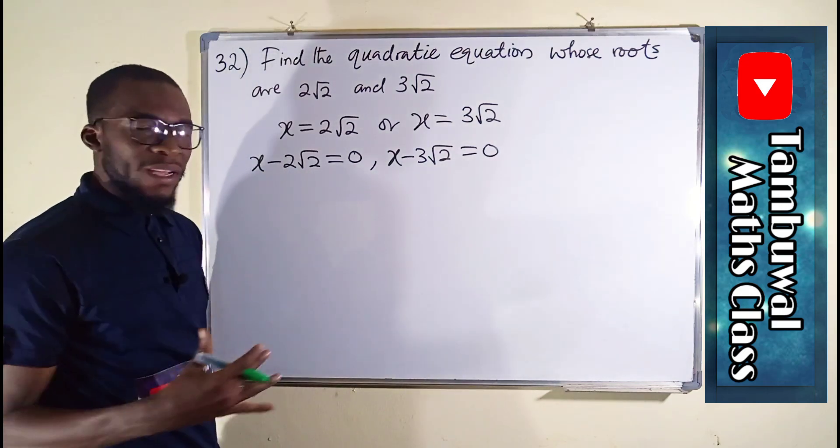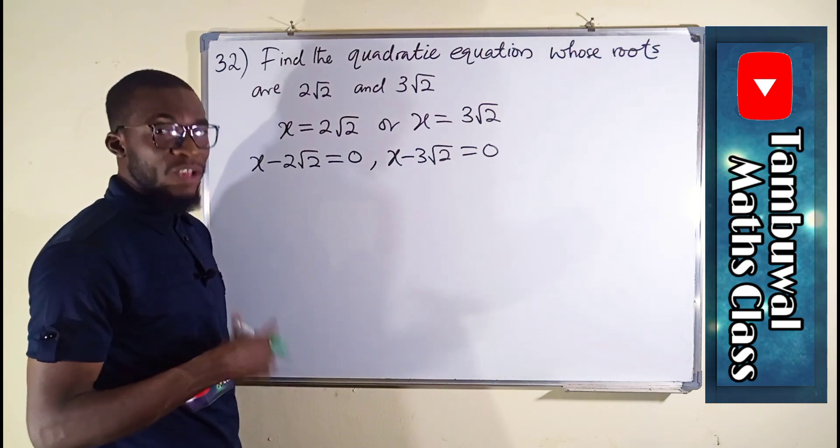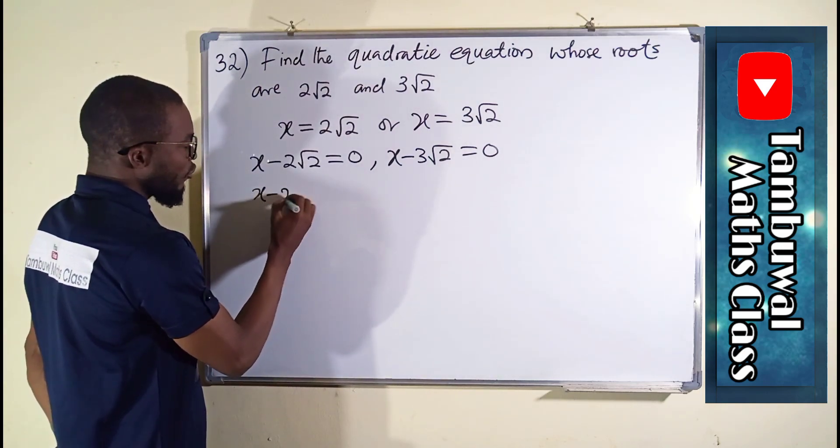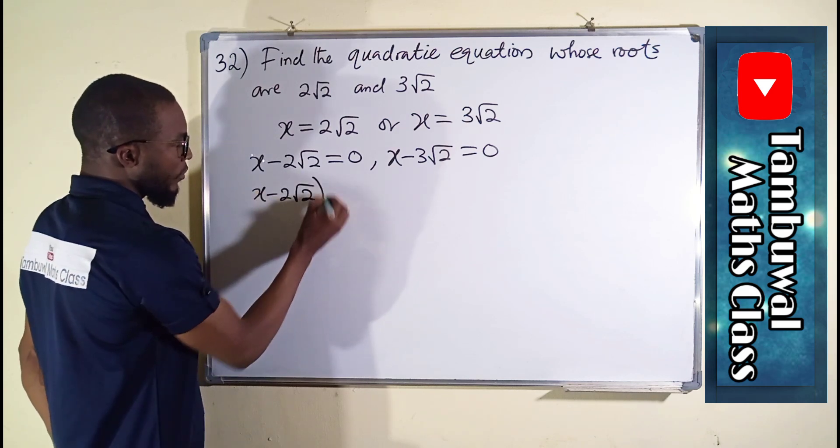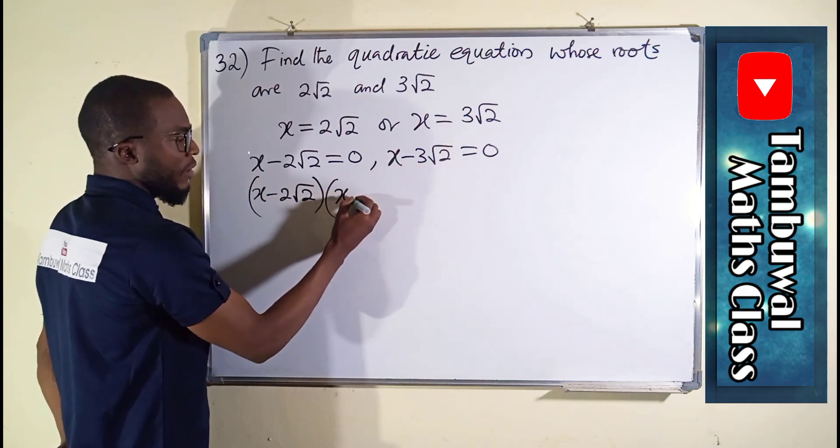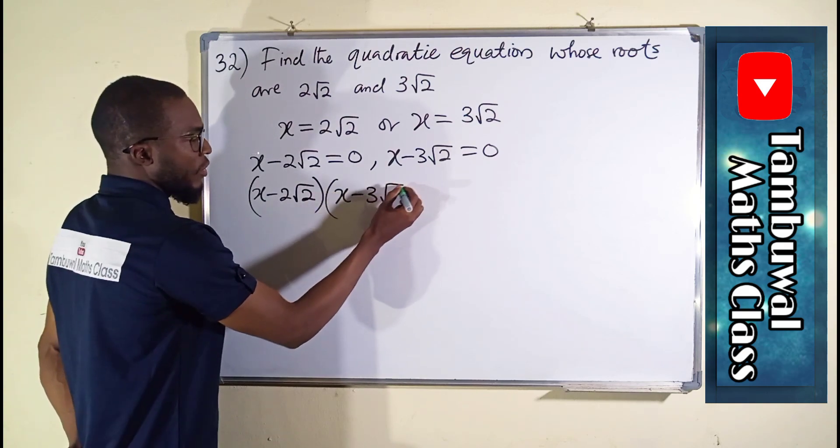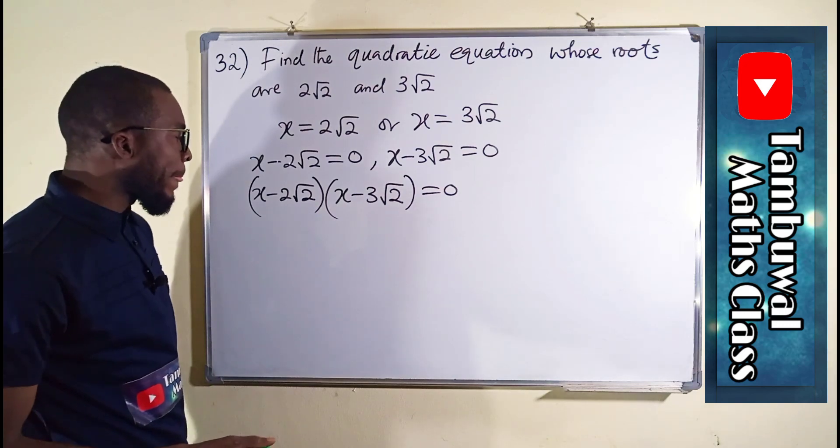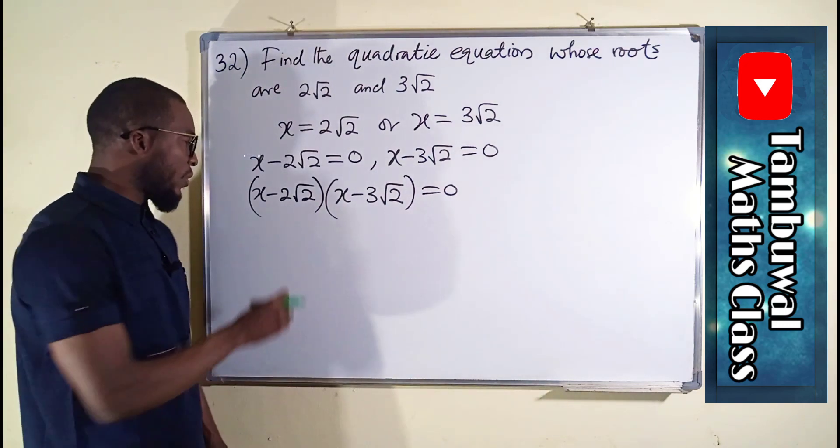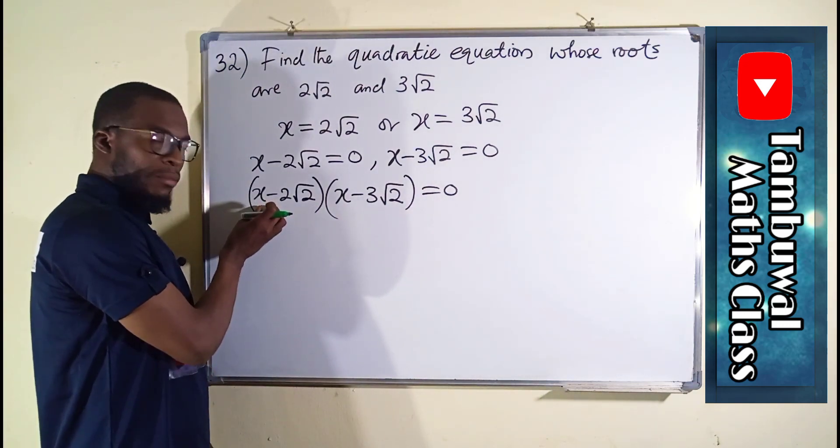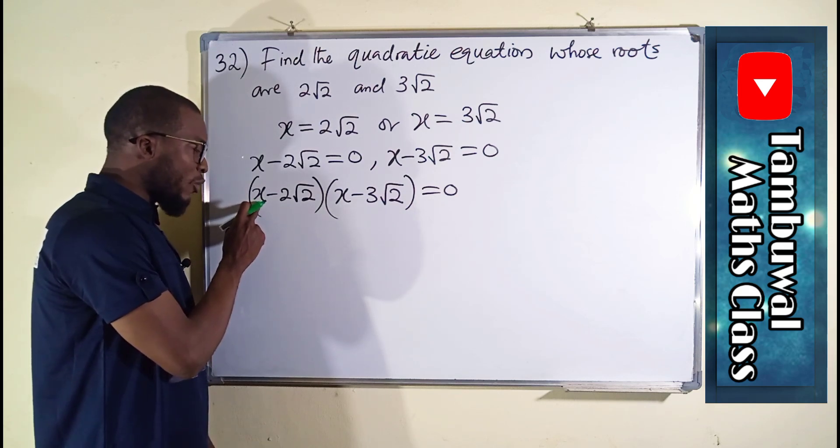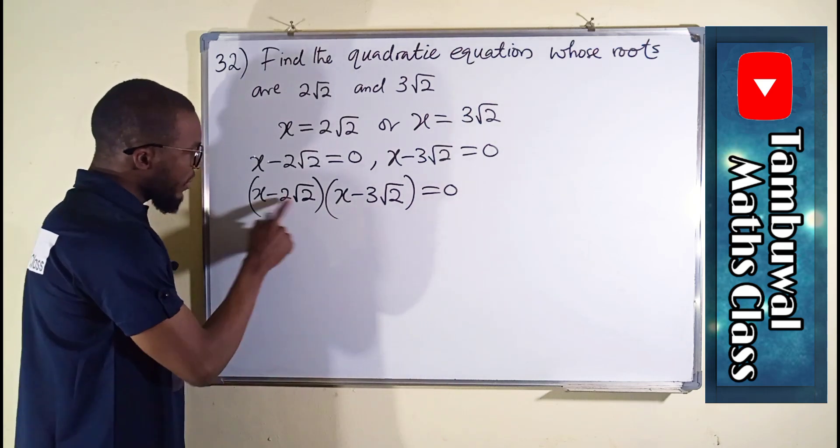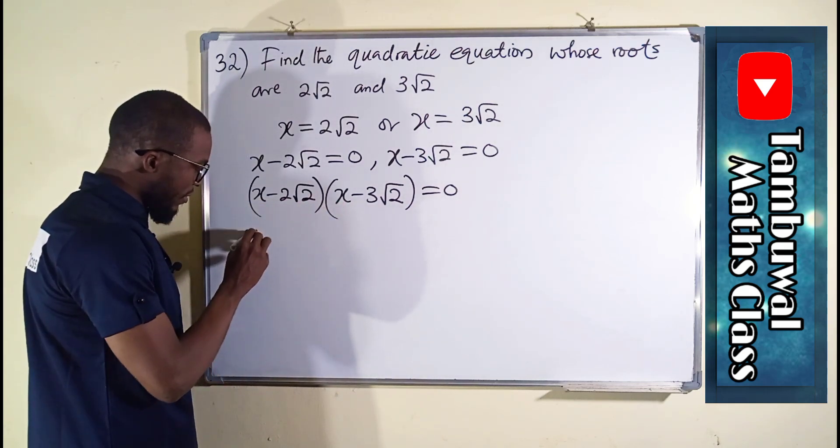So these are the two factors, which when we multiply them together, we are going to obtain that quadratic equation as required. So we say (x - 2√2) multiplied by (x - 3√2), the whole of this equal to zero. Now we are going to distribute. We are going to start with this first term, x. We are going to take it and distribute it through the second parenthesis. x times x is x².